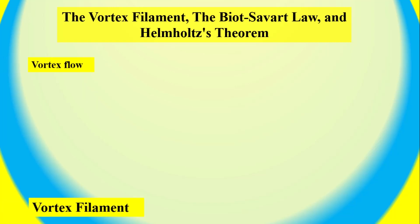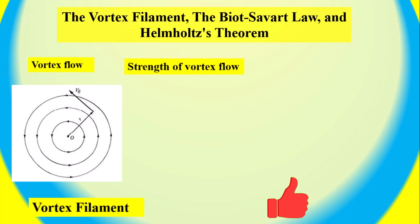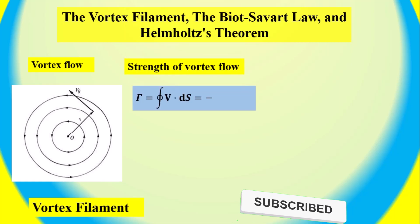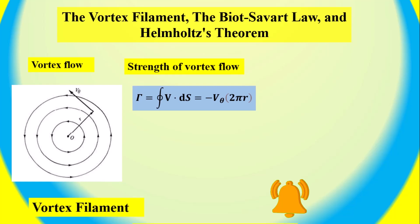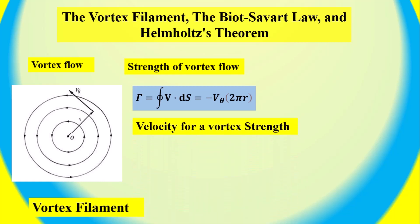A vortex filament is the result of a vortex flow at a specific point. The strength of the vortex flow determines the induced velocity and eventually leads to the formation of a vortex filament. The vortex filament is a mathematical representation of a fluid flow that is swirling and spinning around a central axis.